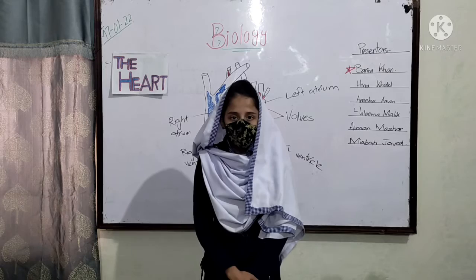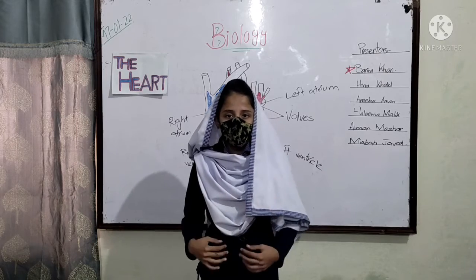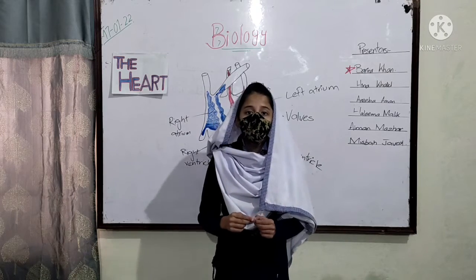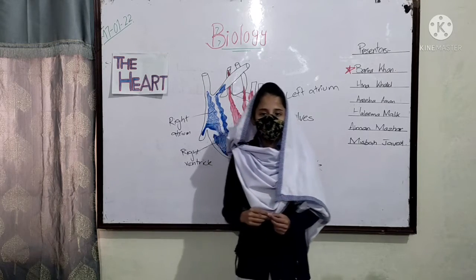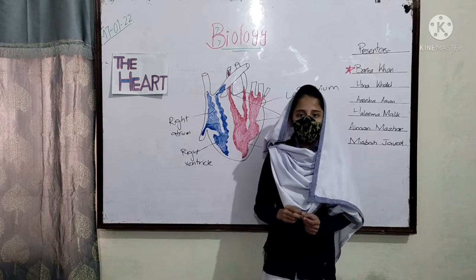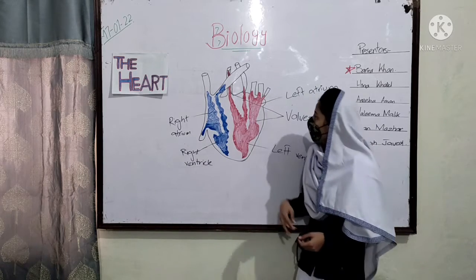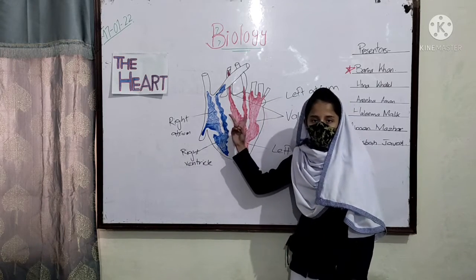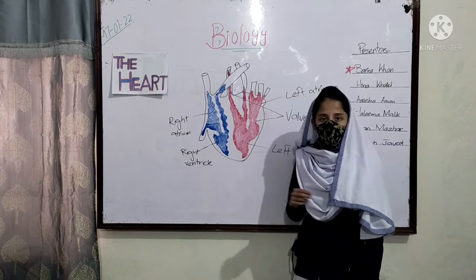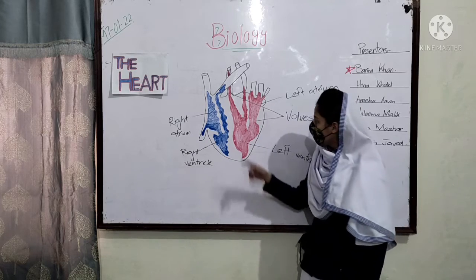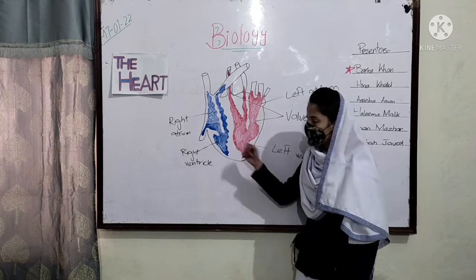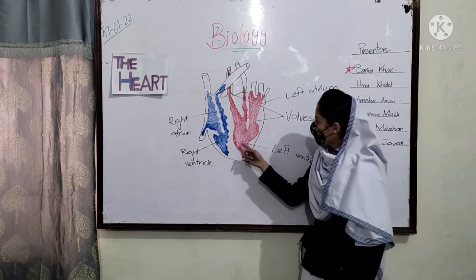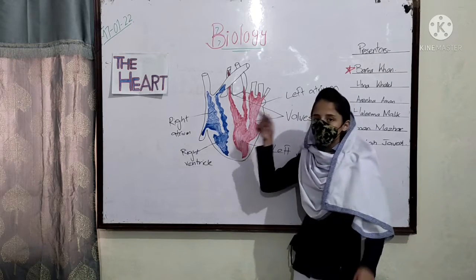The heart pumps oxygen-rich blood, meaning oxygenated blood, to the body, and oxygen-poor blood, meaning deoxygenated blood, to the lungs. The upper two chambers of the heart are called atria (singular: atrium), and the lower two chambers are called ventricles. The ventricles are larger than the atria.